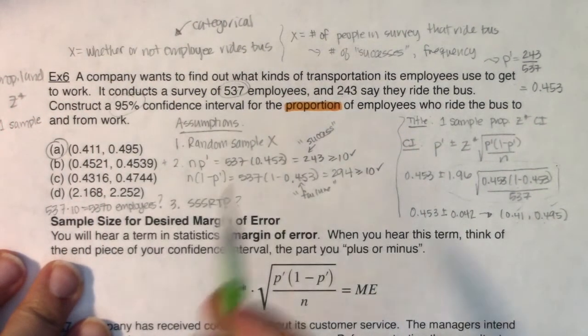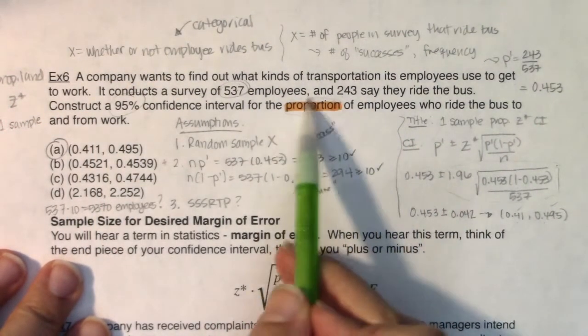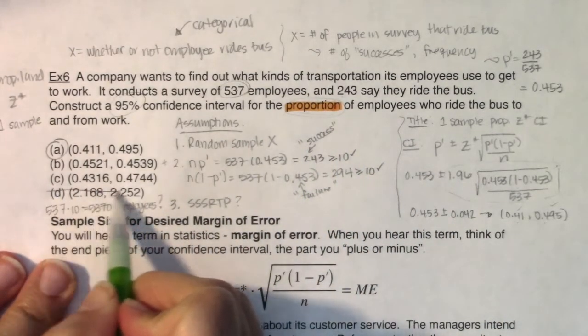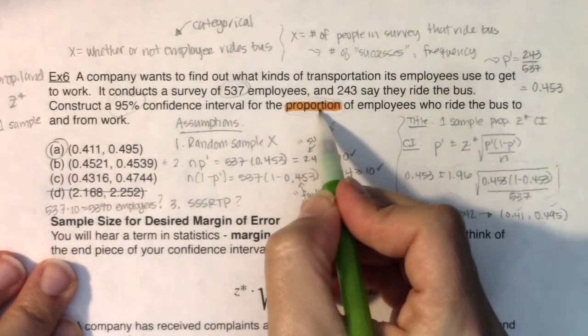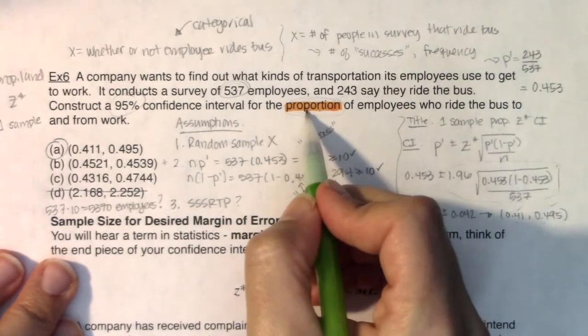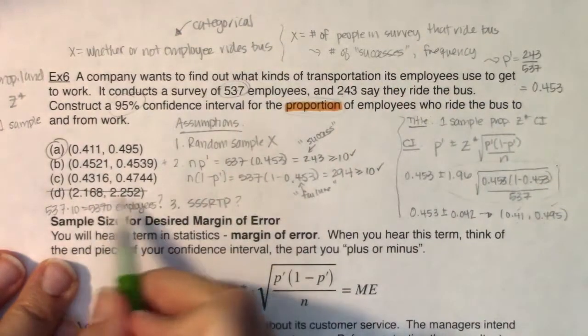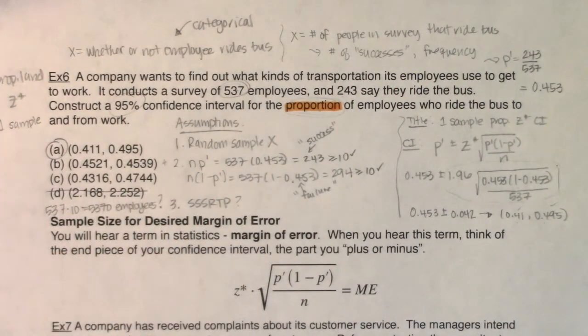One other thing I would point out is as soon as I knew I was in proportion land, then I could rule out D. The reason I can rule out D is any proportion has to be a number between 0 and 1, between 0% and 100%. So there's no way it could be 2.168 to 2.252. All right, thanks so much everyone. Bye.